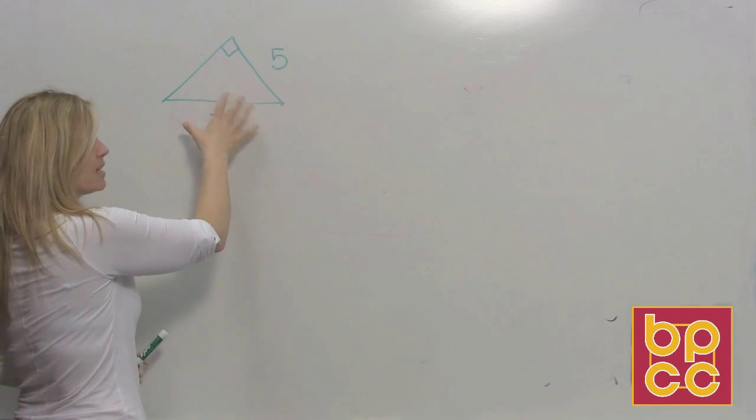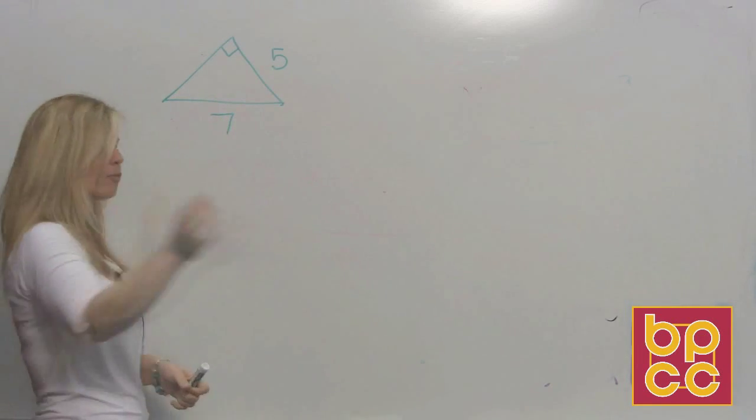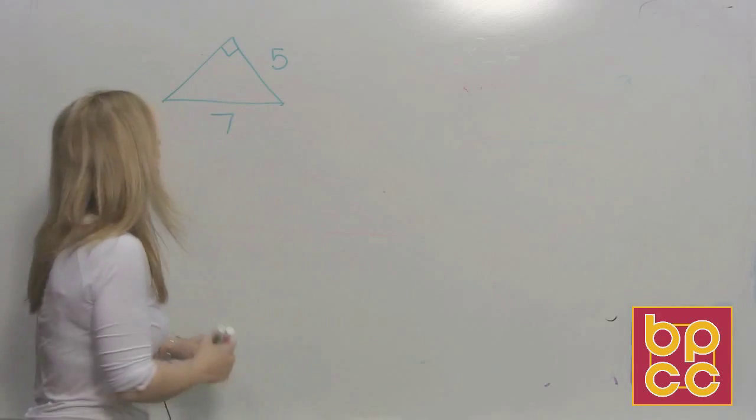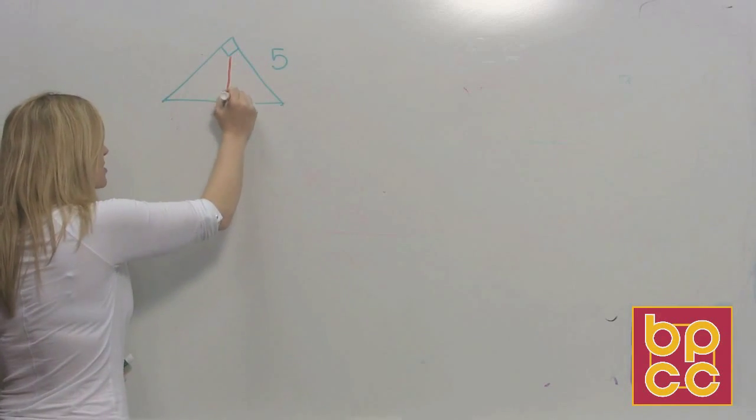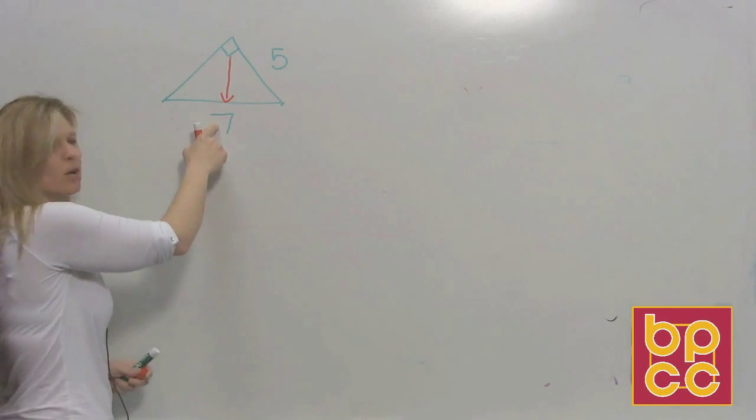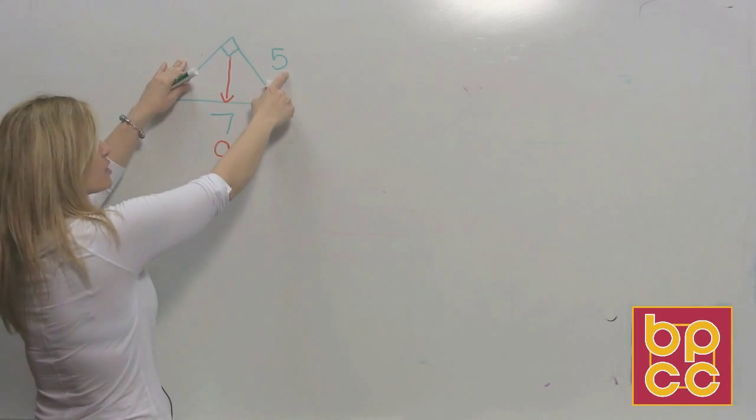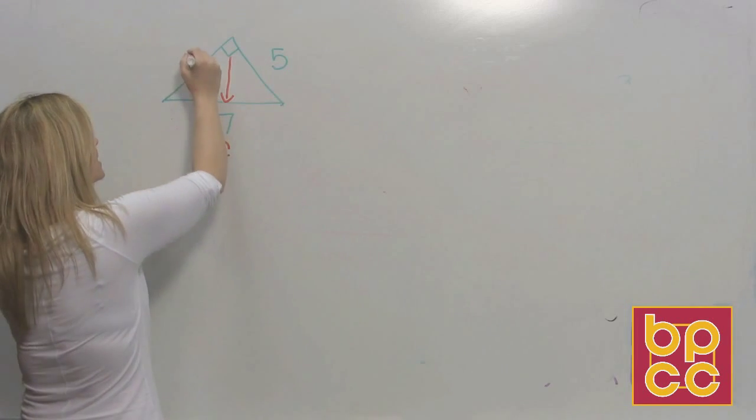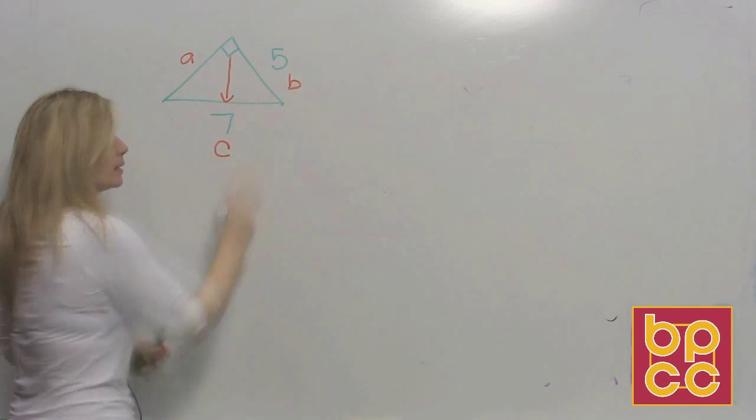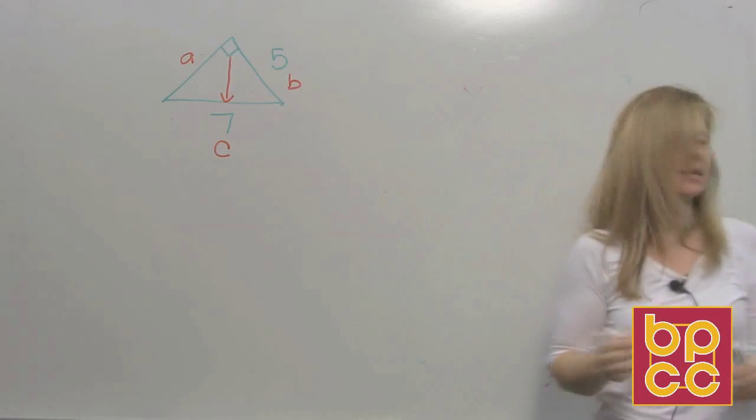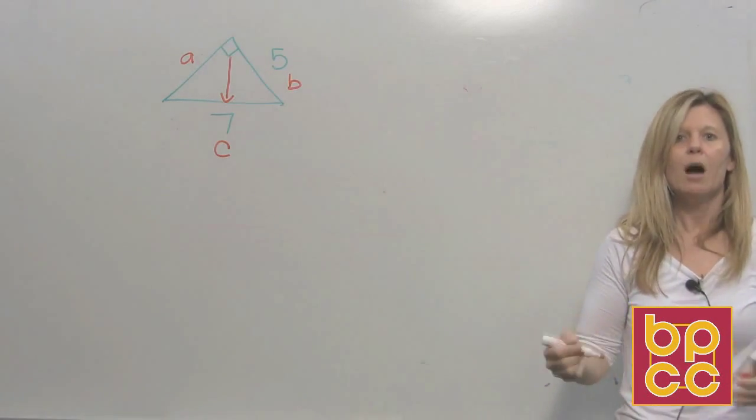Okay. Before you even write down Pythagorean theorem, everybody look. What shape is this? It's a right triangle. How do you know? It has a right angle. Label. Go across. This side is the hypotenuse. What variable is always the hypotenuse? C. The other two sides are legs. What are the legs? A and B. It doesn't matter which one you label A. It doesn't matter which one you label B.